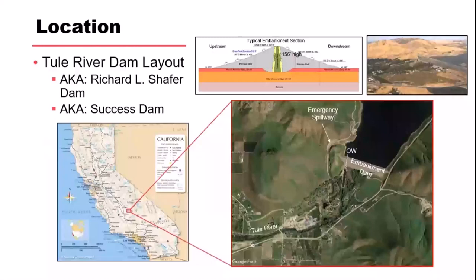Thule River is located outside of Porterville in the Central Valley of California — Bakersfield is about 40-50 miles to the south. It's composed of an embankment dam with a low-level outlet on the right side, and the spillway cut into a notch into a ridge on the far right, detached off the right abutment.